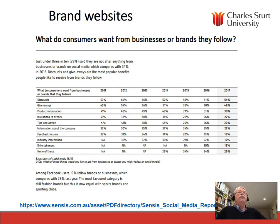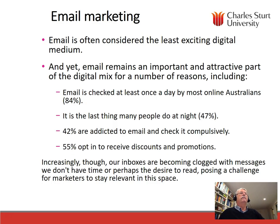What do consumers want from businesses or brands they follow? Looking at 2017 data, 54% want discounts. You can also see giveaways, product information, invitation to events, and tips and advice as the major aspects wanted by consumers when they follow brands. The next area of online marketing we talk about is email marketing.